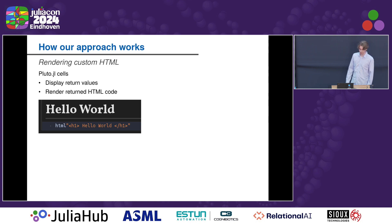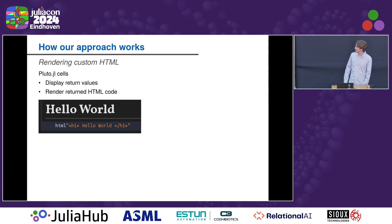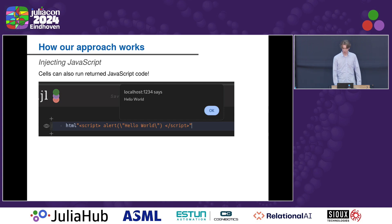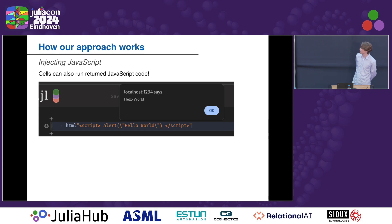How does our approach work? As we've seen in the first image, when we put some code in a Pluto cell, it gets shown at the output of that cell. We can also put an HTML string into a Pluto cell and it gets rendered at the output of the cell. We can do the same with JavaScript — we just insert a script tag into the HTML string. You can see in the image that I've put an alert in it, and the alert is then shown at the top of the screen.